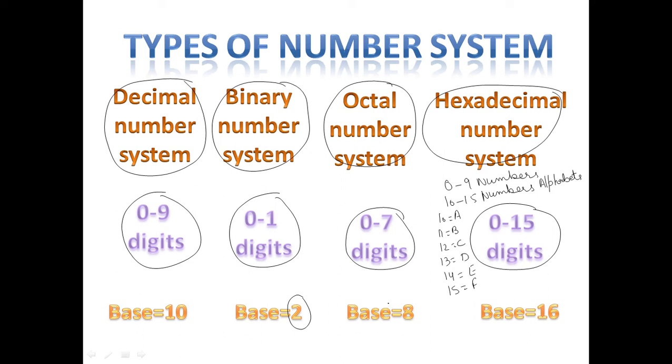In octal number system we use base 8 because we use only 0 to 7 digits. In hexadecimal number system, base is equal to 16 because here we use 0 to 15 digits, so the total is 16 and so its base is 16.